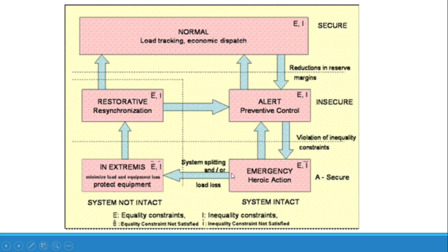The transition from the emergency state to the in-extremis state involves islanding — the system splits into different groups or loses synchronism. From in-extremis it is not possible to go directly back to the emergency state; both equality and inequality constraints are violated. The operator must perform resynchronization to bring the system back to the restorative state and then to the alert or normal state. In the restorative state, voltage and frequency conditions are satisfied but equality constraints are not.